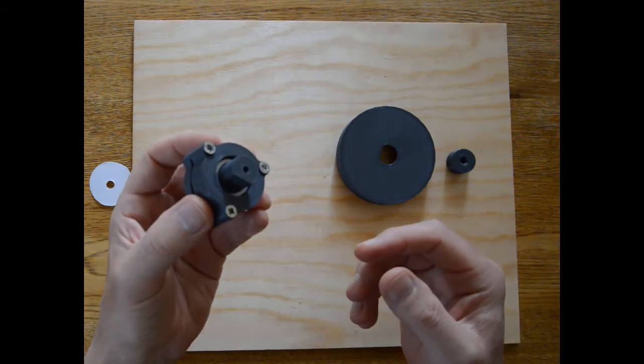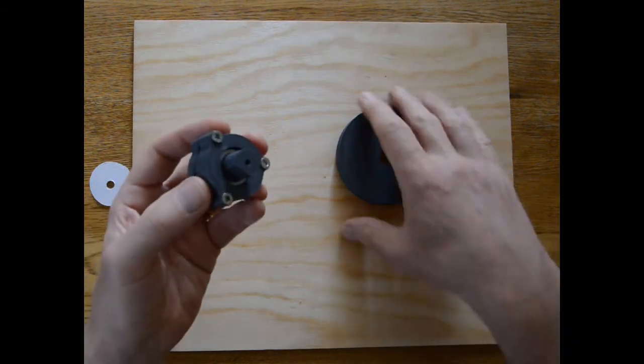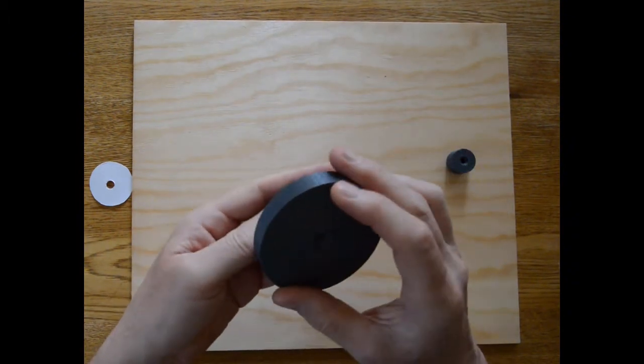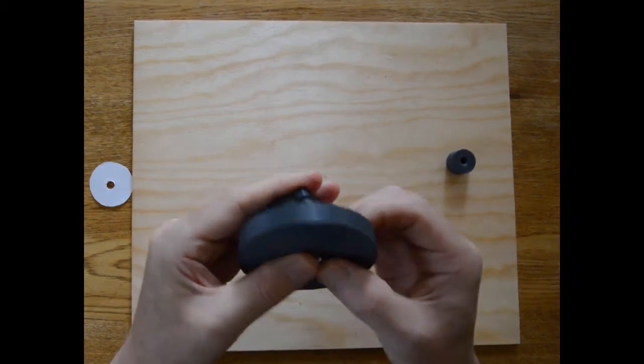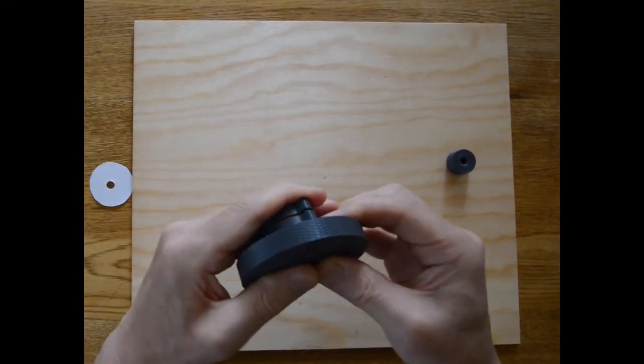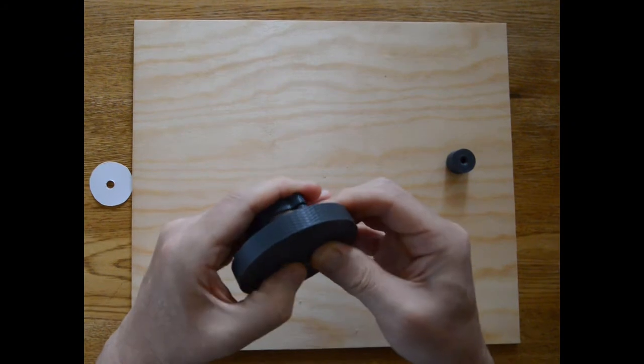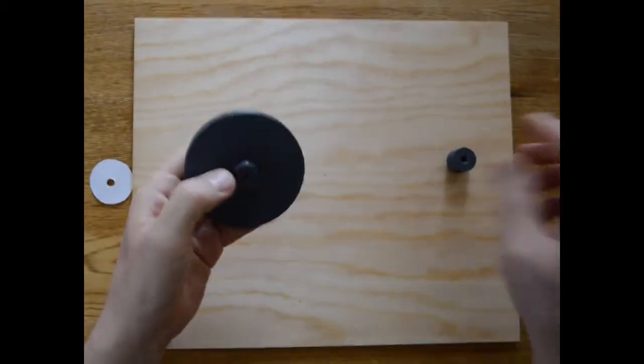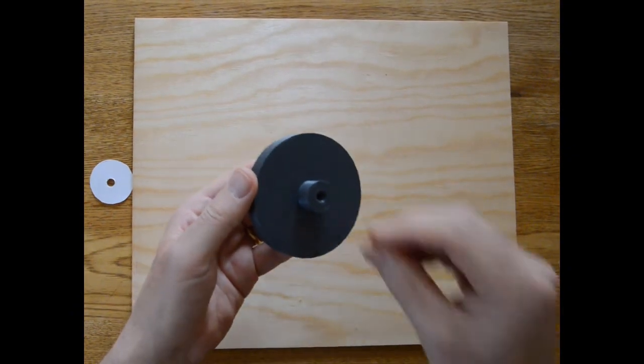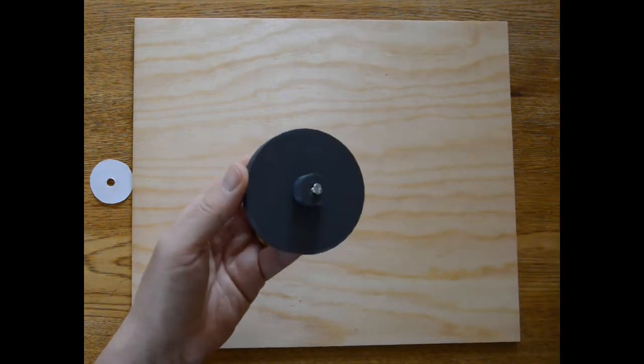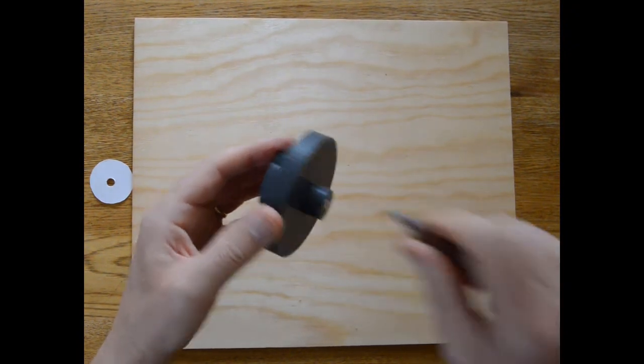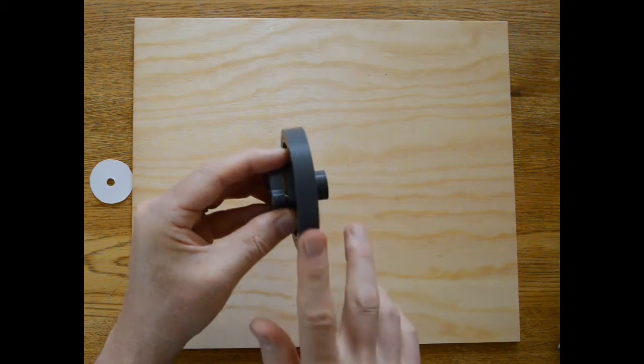Now we'll turn it into a DR400 trim wheel by adding this nice knurled edge trim wheel. Tight fitting knurled edge trim wheel. And a retaining hubcap. There's our trim wheel.